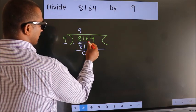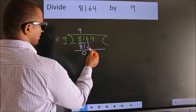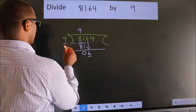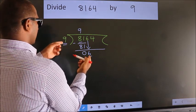After this, bring down the next number. So, 6 down. Here we have 6, here 9. 6 is smaller than 9.